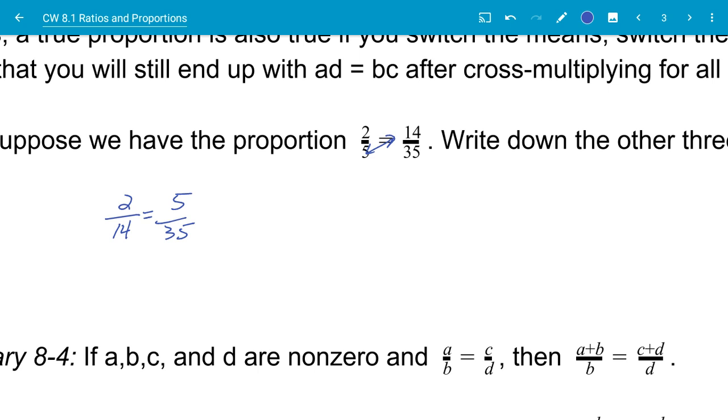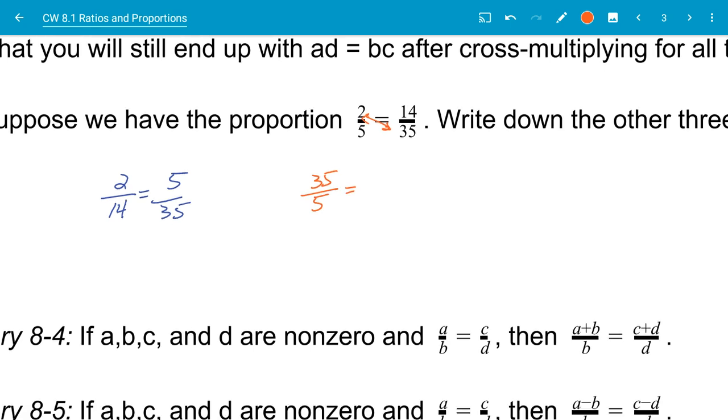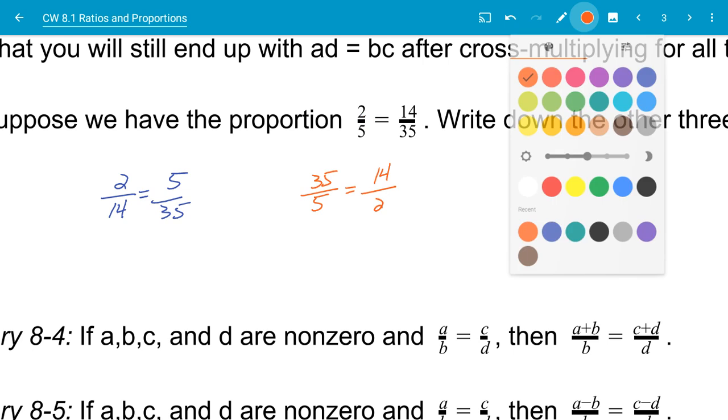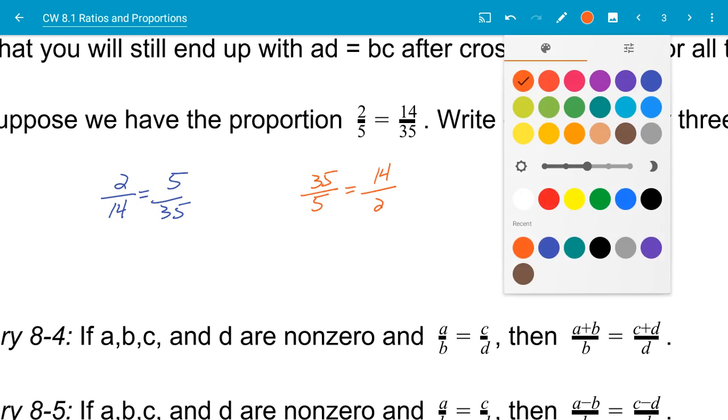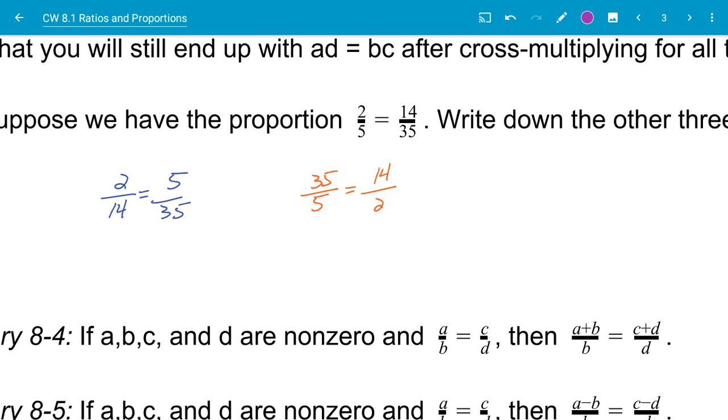And then on the next one, what I'm going to do is I'm going to swap, flip my, trade places with my extremes. When I do that, I will have 35 over 5 is equal to 14 over 2. And then the last thing that I'm going to do for my last proportion that I have is I'm going to just flip the ratio. So I'm going to say 5 over 2 is equal to 35 over 14.